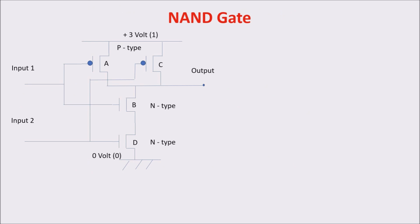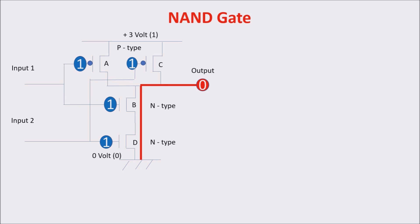So now we start to create something useful with our switches. Our first gate is the NAND gate. We build it with four transistors, coupled 2x2, P-type with N-type. The gate of P-type transistor A is connected with the gate of N-type transistor B, and the gate of transistor C is connected with the gate of transistor D. In this configuration, if we put a 1 in both inputs, the N-type transistors turn ON and the P-types turn OFF, thus connecting the output with 0.